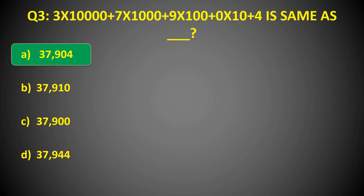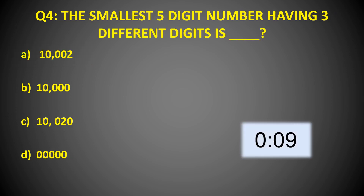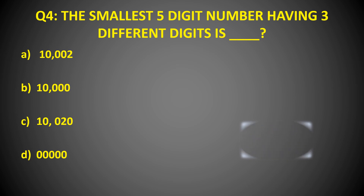Here goes the next question: The smallest five-digit number having three different digits is? Time's up! And the right answer is 10,002. Remember, the question was smallest five-digit number but with three different digits, so the answer is 10,002.